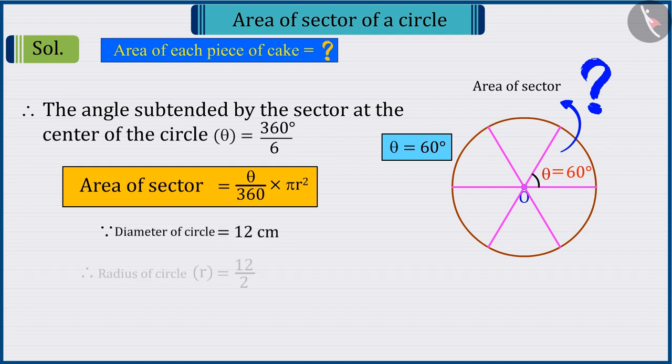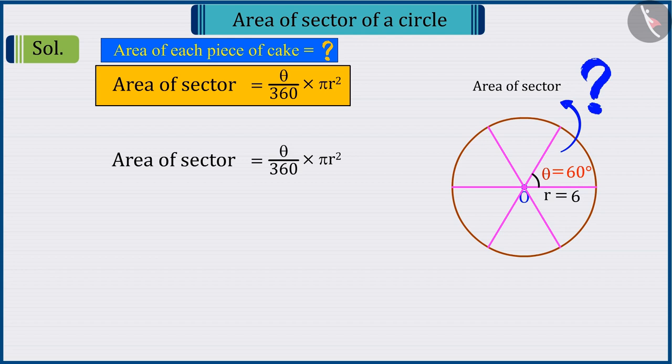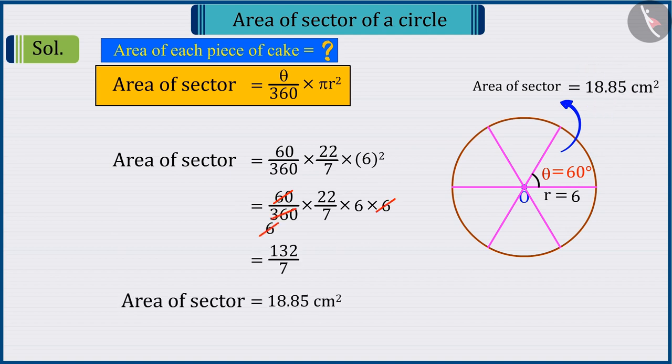Now by assuming the value as R, we get the radius as 6 from the diameter of the cake. In the above formula, by putting the value of theta and R and solving it, area of the sector is found to be 18.85 square centimetres.